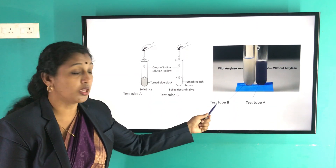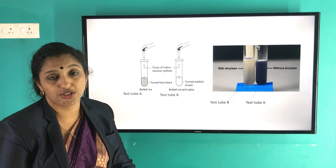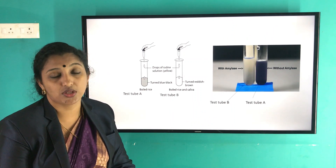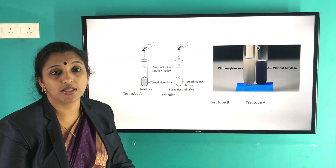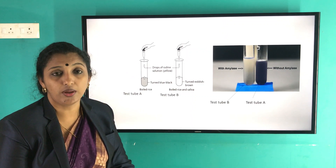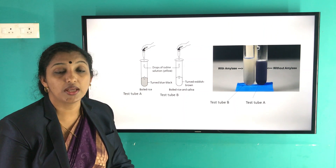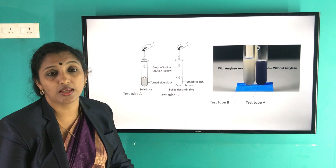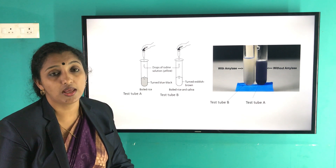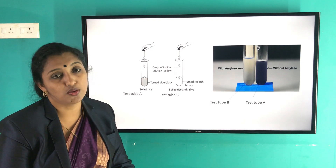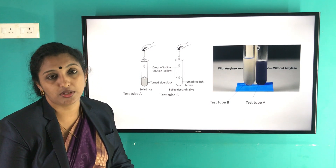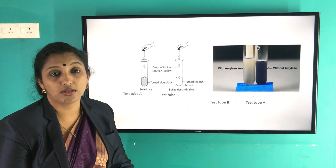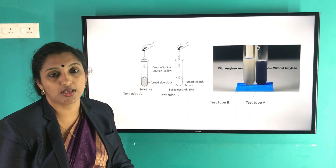But in test tube B, we cannot see any color change, meaning there is no starch. What happened in test tube B? Salivary amylase present in the saliva broke down the starch in the rice into glucose. Iodine does not react with glucose — it only shows blue-black color in the presence of starch. You already studied the iodine test in 6th standard.